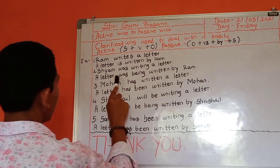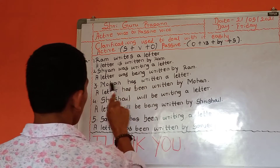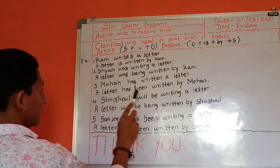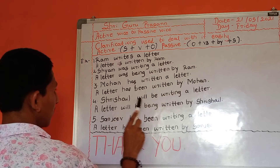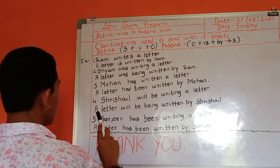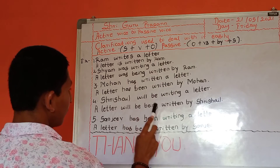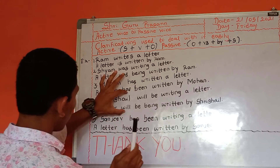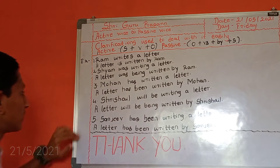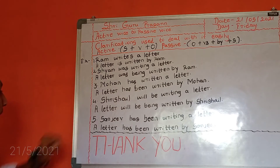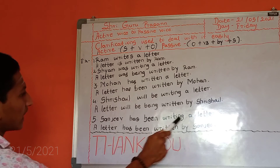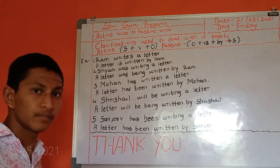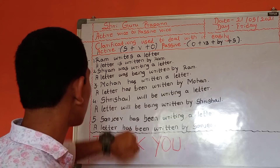And these are the examples: Ram was writing a letter — a letter was being written by Ram. Mohan has written a letter — a letter has been written by Mohan. Srisheel will be writing a letter — a letter will be being written by Srisheel. This is a long example, as you can see. And Sanjeev has been writing a letter — a letter has been being written by Sanjeev. As you can see here, these five examples are there.